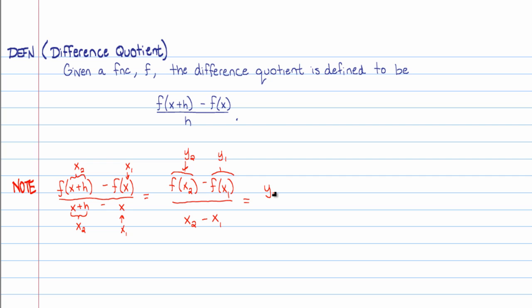So really if I wanted to rewrite this, it would be y₂ minus y₁, and then denominator is still x₂ minus x₁, and this should be very familiar to you. This is actually the slope. So this is the slope of a line. I don't want to say the line, but it's the slope of a line connecting x₁ comma y₁ and x₂ comma y₂.